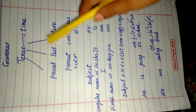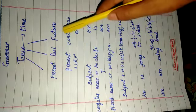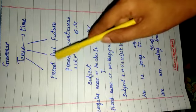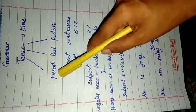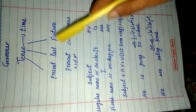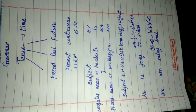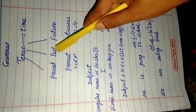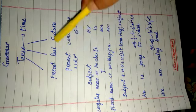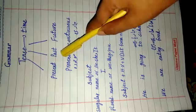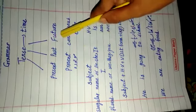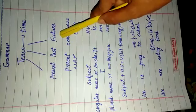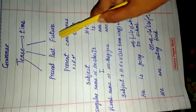There are three types of tense: present, past, and future. Present means mujuda time — the time which is going on. Past means guzrawa time — the time which we have spent. And future means aatimala time — coming time.